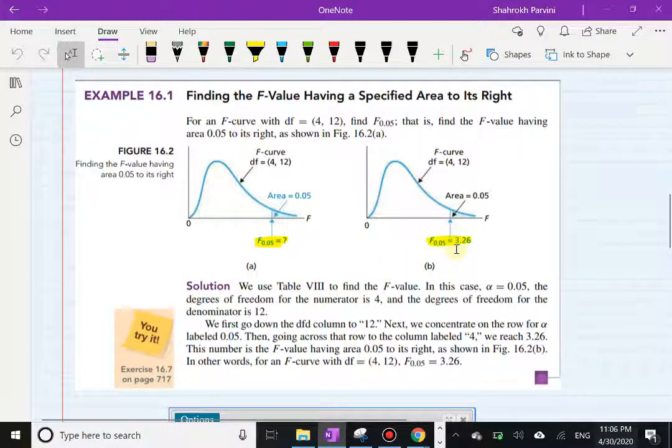So from the table—that's what the author did—he went to his table in the back of the book with these parameters 4 and 12 and the right tail area 0.05, and this is the value of F that he found.